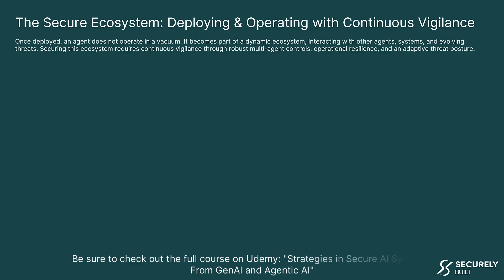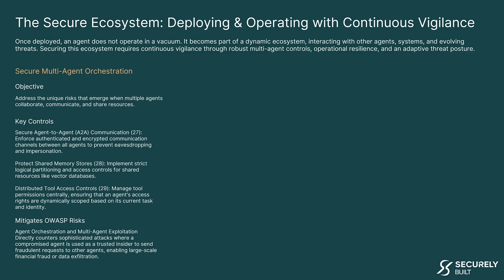Once deployed, an agent doesn't operate in a vacuum. It becomes part of a dynamic ecosystem interacting with other agents, systems, and evolving threats. Securing this ecosystem requires continuous vigilance through robust multi-agent controls, operational resilience, and an adaptive threat posture. The first area is secure multi-agent orchestration — addressing the unique risks that emerge when multiple agents collaborate, communicate, and share resources. Key controls include secure agent-to-agent communication with authenticated and encrypted channels, protecting shared memory stores like vector databases with strict logical partitioning, and distributed tool access controls where an agent's access rights are dynamically scoped based on its current task and identity. This directly counters attacks where a compromised agent is used as a trusted insider to send fraudulent requests to other agents.